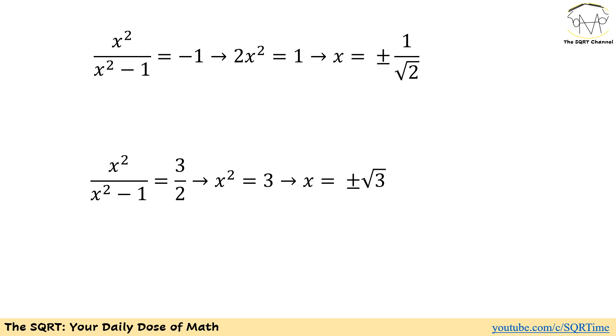On the other hand for the second one we have x squared over x squared minus 1 is equal to 3 over 2. So x squared can be 3 and then x is going to be plus minus square root of 3. All these values can be answers and we have 4 answers for the equation that we have.